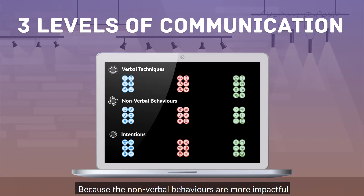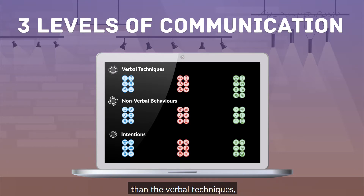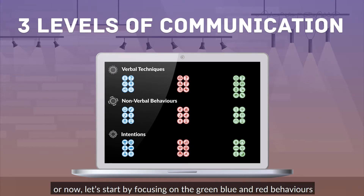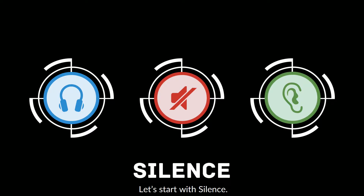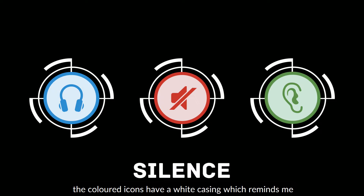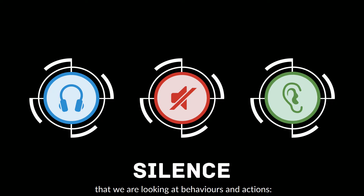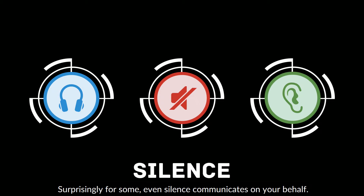Because the non-verbal behaviours are more impactful than the verbal techniques, let's start by focusing on the green, blue, and red behaviours with some concrete examples — we'll leave the verbal and intention levels for later videos. Let's start with silence. The coloured icons have a white casing symbolising that we're looking at behaviours and actions — the 93% of what we communicate. Even silence communicates on your behalf.